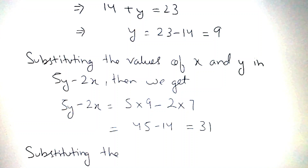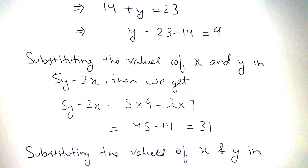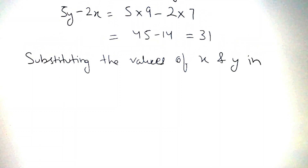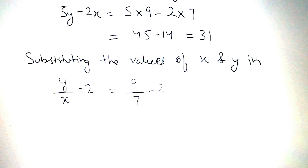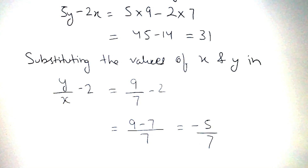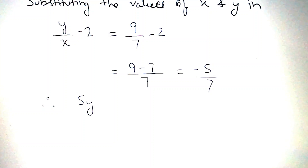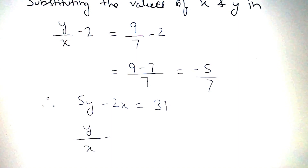Again, substituting the values of x and y in y by x minus 2, we get 9 by 7 minus 2, which is equal to 9 by 5, that is equal to 9 by 5.